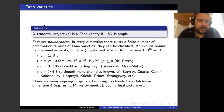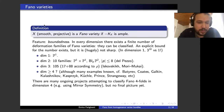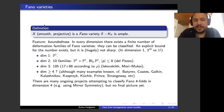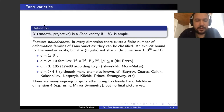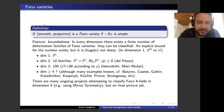In dimension two, Fano varieties are classified and there are 10 families: you can take either P1×P1, or P2 blown up in up to eight points in sufficiently general position. These are called del Pezzo surfaces. In dimension three, you have 105 families of Fano threefolds, which I like to write as 17 + 88 according to the Picard rank. The 17 are prime (Picard rank one) and the 88 are non-prime. The classification is due to Fano, Iskovskikh, and Mori–Mukai. In dimension four and beyond, there is no classification, though there are many examples and ongoing projects attempting to classify Fano fourfolds, for example using torus symmetry, but there is no final picture yet.